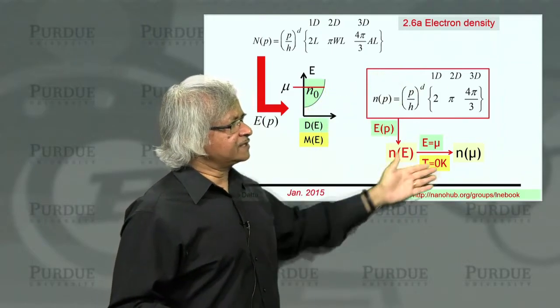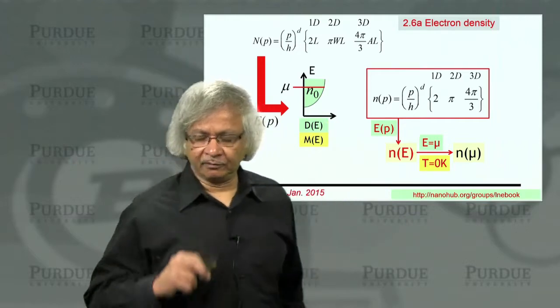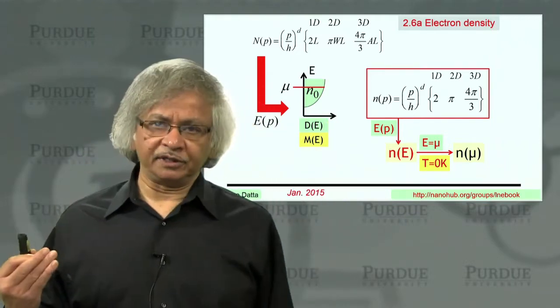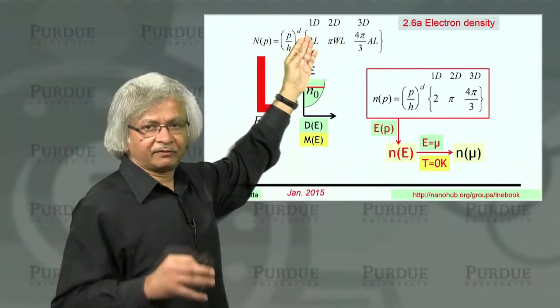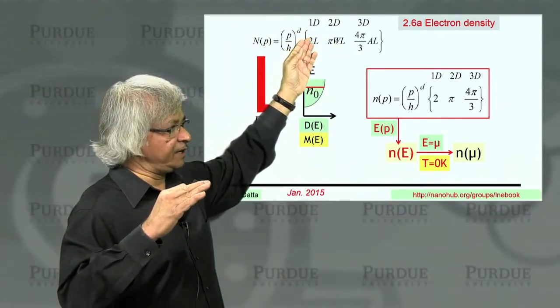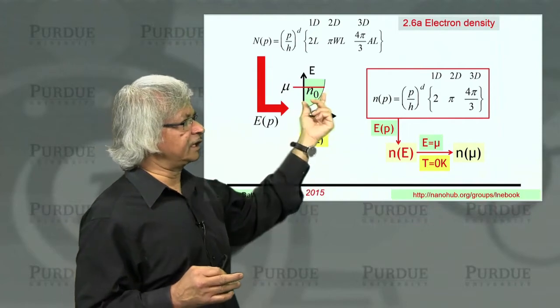Now, so this is fairly straightforward if you think about it at 0 temperature. In that case, the function we have been discussing, this comes back from lecture 3, that itself will give you the electron density.